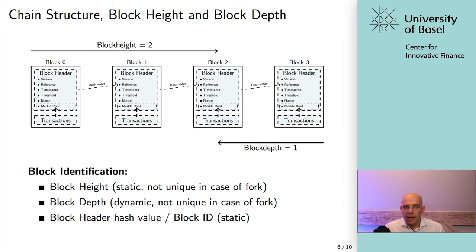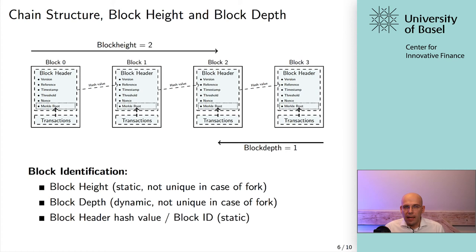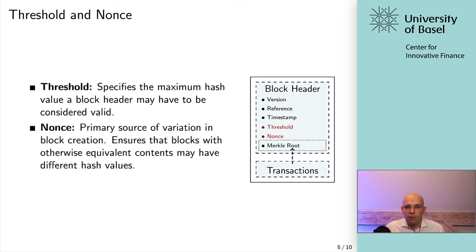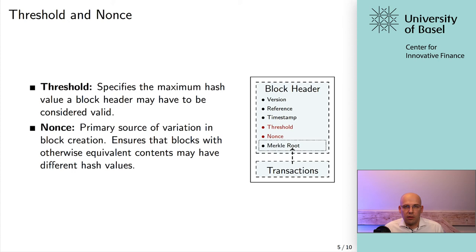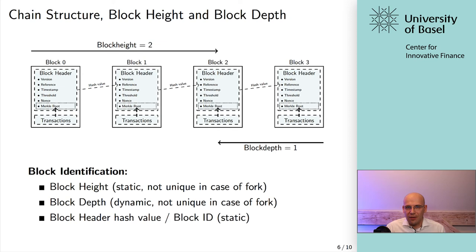That was the block creation — assembling a block with its main contents. This should give you a good understanding of what a block looks like and how it can be assembled. Essentially, that's what all nodes can do; it's quite straightforward and part of the standard software distribution. It's not computationally intensive — you can do it with your client software very quickly. Now, we talk about the blockchain essentially — the chain structure — a sequence of blocks, not individual blocks. So of course there must be some additional elements.